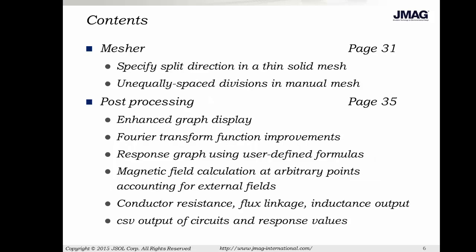As far as the mesher goes, you can now specify a split direction in a thin solid mesh and create unequally spaced divisions in a manual mesh. We've also made many improvements in our post-processing tools to make them both easier to use and visually better. Graphs will have more data and easier customization settings. The Fourier transform function is easier to set and store results. You can also create custom formulas and add them to your response graph. If you're calculating an external magnetic field, you can now plot the results at arbitrary points. We also added an automatic calculation for resistance, flux linkage, and inductance of coils and conductors. Lastly, you can now output a CSV file with circuit results.